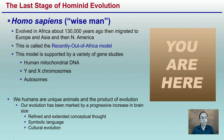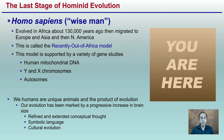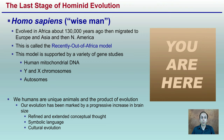Homo sapiens — the wise men — evolved from Africa about 130,000 years ago and migrated to Europe, Asia, and ultimately North America. This is called the Recent Out of Africa model, supported by a variety of gene studies looking at mitochondrial DNA, X and Y chromosomes, and autosomes. We as humans are unique animals and the product of evolution, marked by a progressive increase in brain size, refined and extended conceptual thought, symbolic language, and cultural evolution.